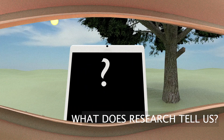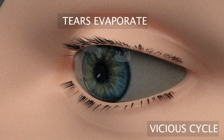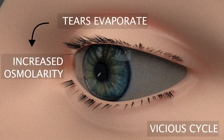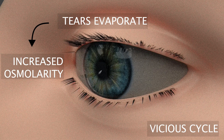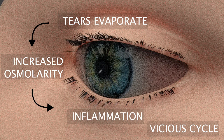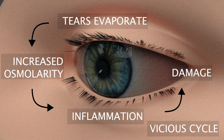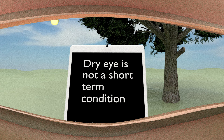So what does research tell us about the underlying process that causes dry eye disease? Tear evaporation leads to tear loss, which increases the osmolarity or saltiness of the tear film. This causes inflammation of the ocular surface, which leads to damage that destabilises the tear film still further, leading to a vicious cycle of disease. Hence, dry eye is not a short-term condition.